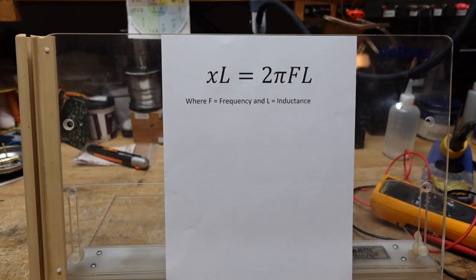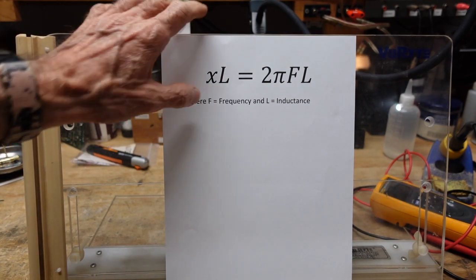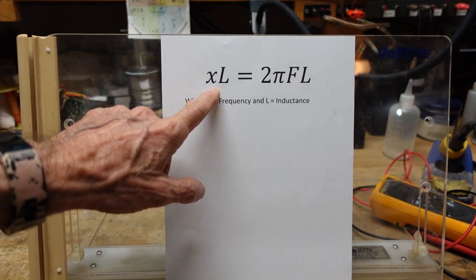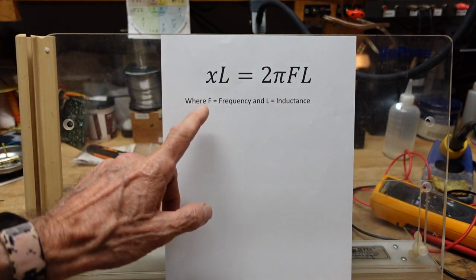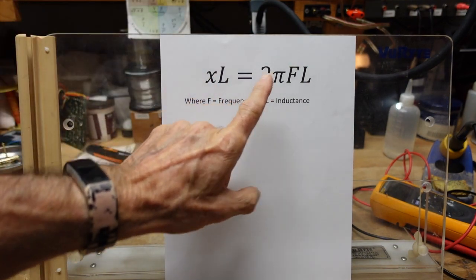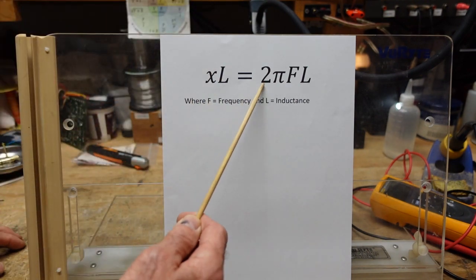Here is the formula for inductive reactance. XL is our symbol for reactance, and L was our symbol for inductors to honor Heinrich Lenz. This formula states that inductive reactance equals 2πfL, where f is frequency and L is inductance. If any of these parameters change, the reactance changes — if any go up, the reactance goes up; if any go down, the reactance goes down. However, the first two terms (2π) are constants.